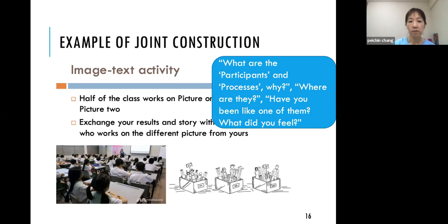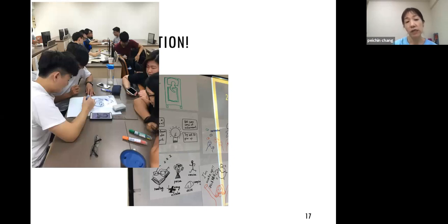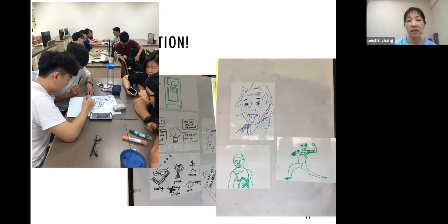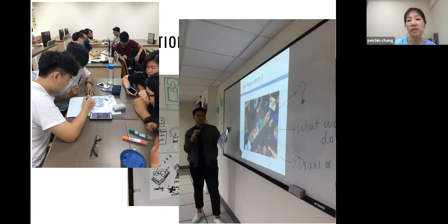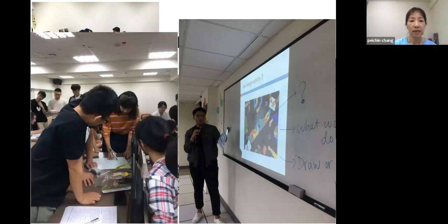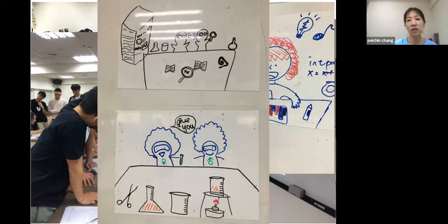Students co-constructed meanings together. They drew a lot during the class related to education, and I found it very engaging — drawing was a common phenomenon I observed when they worked with visuals. Some were quite talented in drawing. Students were asked to identify processes in the text — they stood up, looked, discussed, and came to the front to discuss what the image was about. They were very engaged.